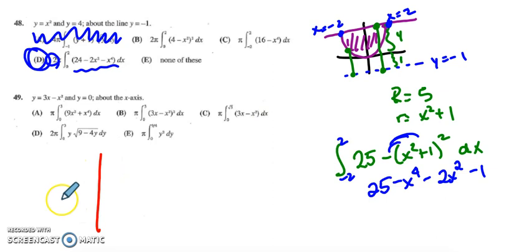For the second problem, let's graph again 3x minus x squared. If I factor out an x, I'll have 3 minus x. So I have limits, or I have x-intercepts at 0 and 3. And I have an upside down parabola because of the negative x squared.